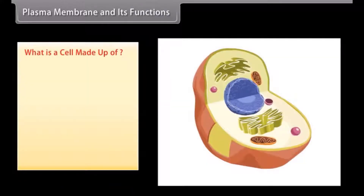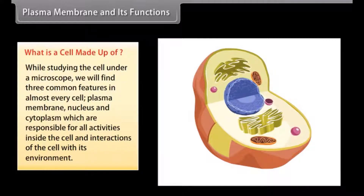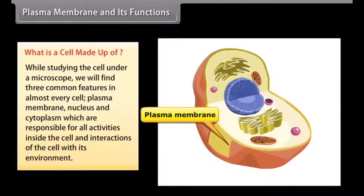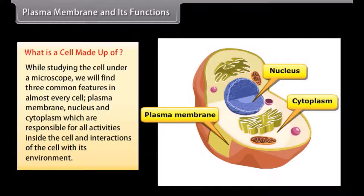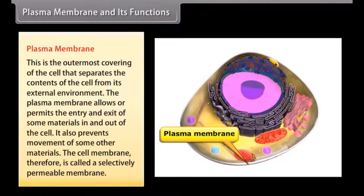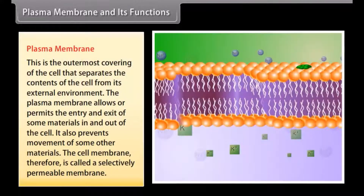What is a cell made up of? While studying the cell under a microscope we find three common features in almost every cell: plasma membrane, nucleus, and cytoplasm, which are responsible for all activities inside the cell and interactions with its environment. The plasma membrane is the outermost covering of the cell that separates the contents of the cell from its external environment. It allows or permits the entry or exit of some materials in and out of the cell, while preventing movement of some other materials — it is therefore called a selectively permeable membrane.